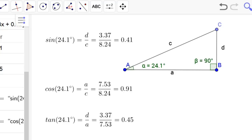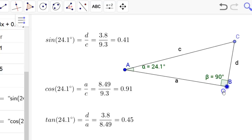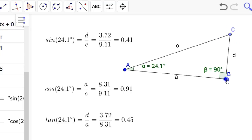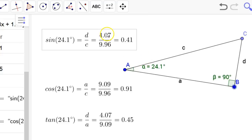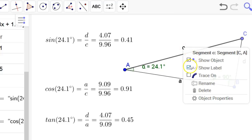We have alpha being 24 degrees, and we keep alpha as 24 degrees. Notice this sine 24 is d over c, which is opposite over hypotenuse, which is 4.07 is the length of d, 9.96 is the length of c. I could put those in, object properties. Let me put that value in there so you can see it.